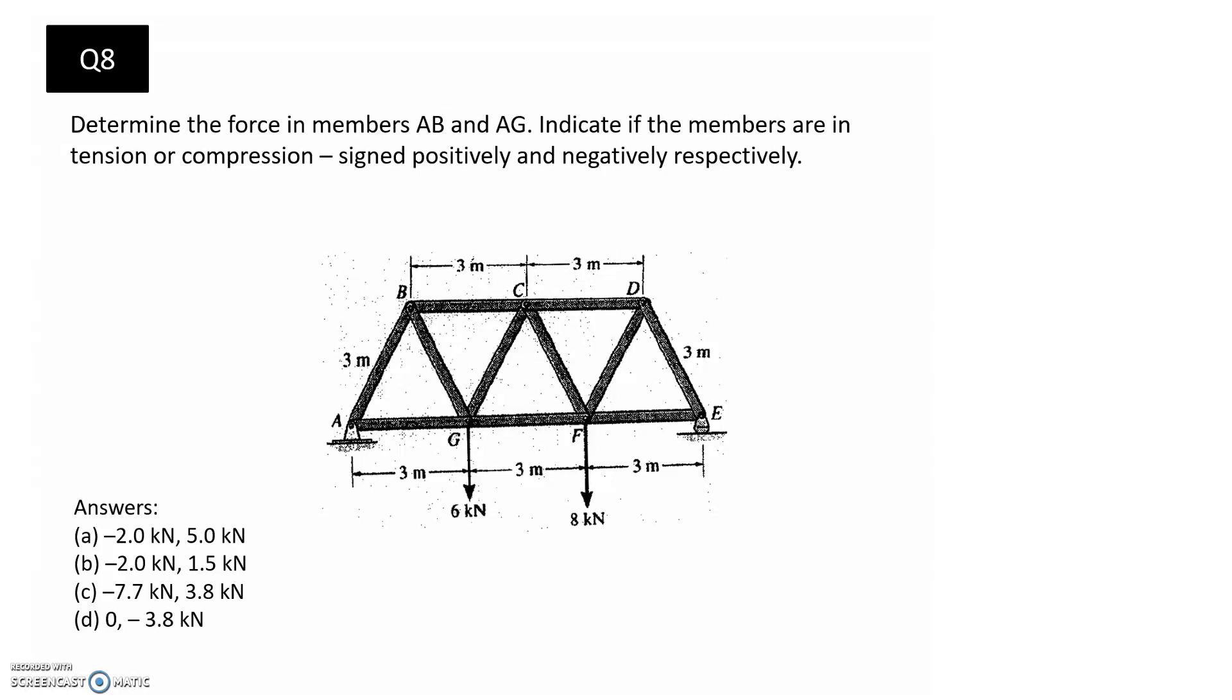We're asked to determine the force in members AB and AG, and for the answers we need to indicate if the members are tension or compression through the signage. Positive will be tension and compression will be negative. AB and AG are these two members on the end here.